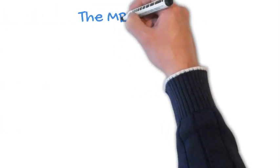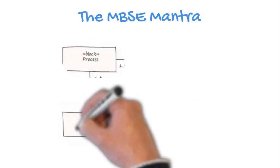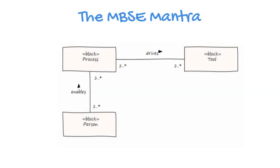As we all know from the MBSE mantra, in order to deploy successful MBSE, there are three considerations: people, process, and tools. The people enable the process, and the process drives the tool. We need to understand the relationships between these three concepts. This is discussed in some of our other videos, so we won't dwell too much on it for now.